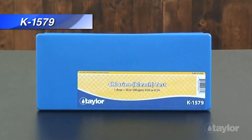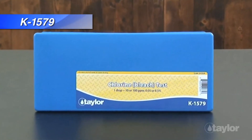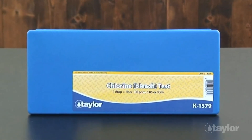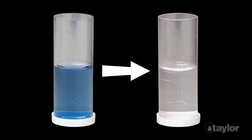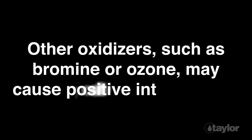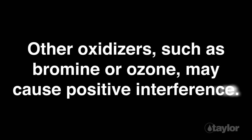The drop test employed in Taylor's K1579 incorporates an iodine starch titration, and the endpoint is easy to recognize as the water sample changes from blue to colorless — no color matching is required. Note that other oxidizers such as bromine or ozone may cause positive interference.